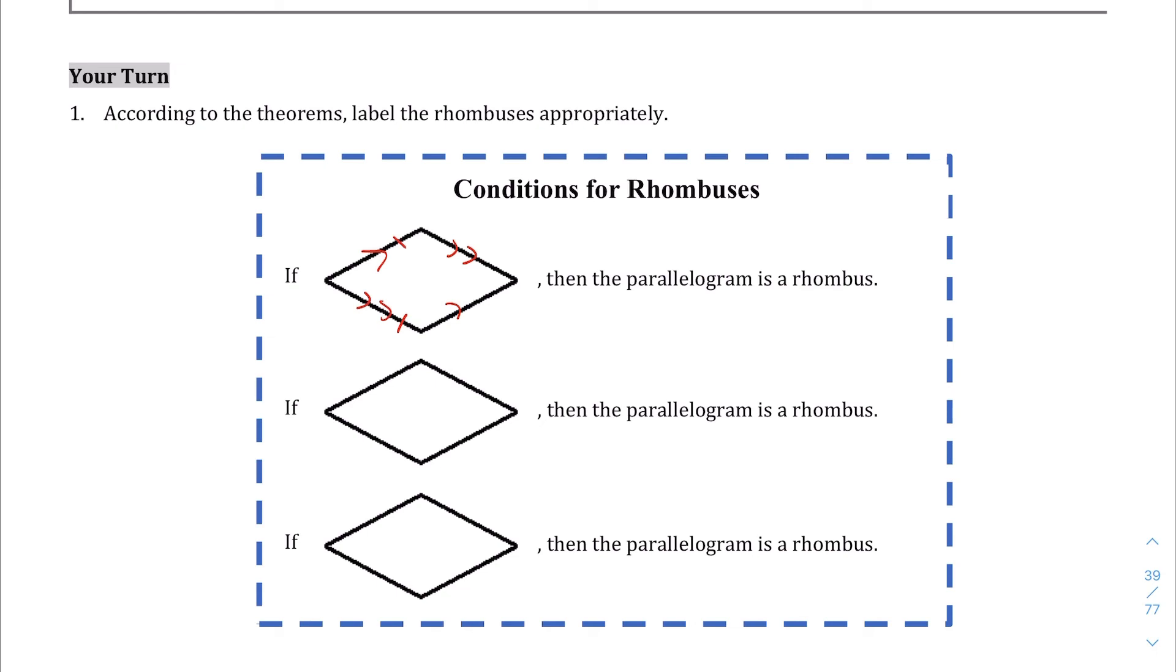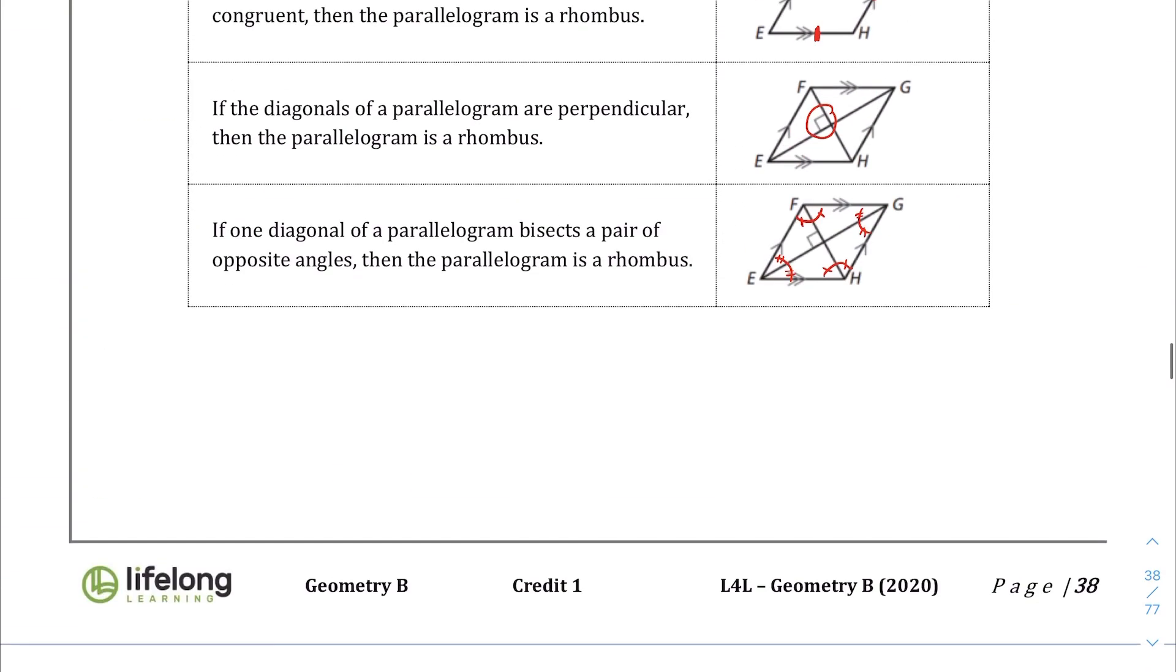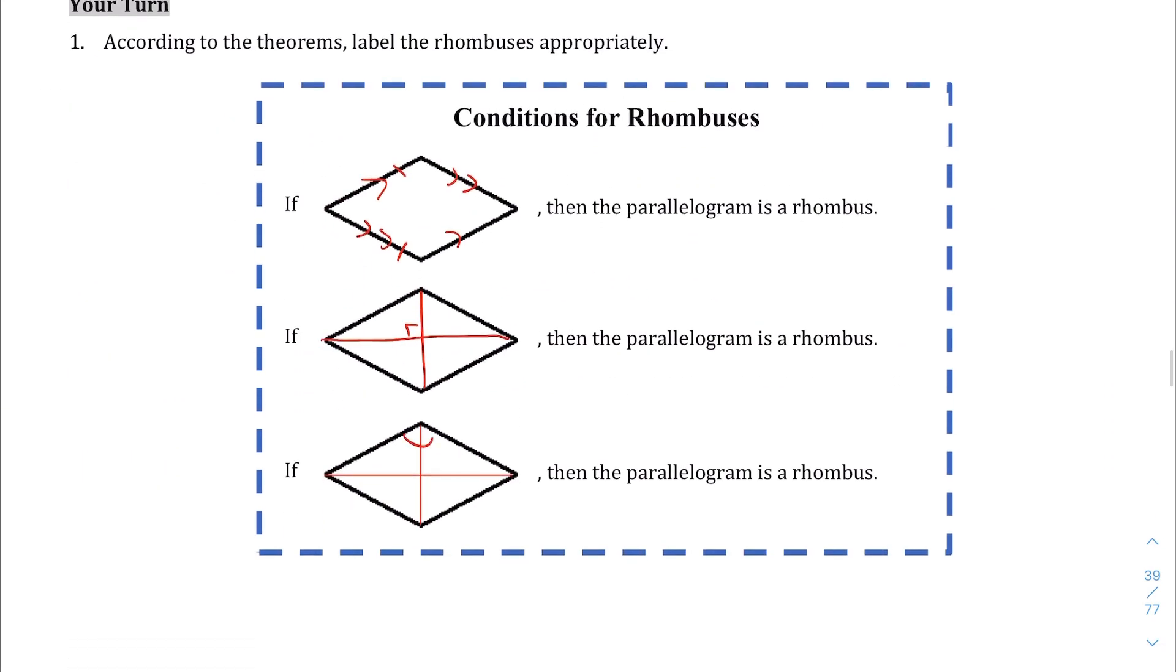The second one was that if you drew the diagonals and the diagonals make a 90 degree angle, you have a rhombus. The third one was that if you have a parallelogram and when you drew these diagonals, after you've drawn these diagonals, if it bisected the opposite angles, then you have a rhombus.